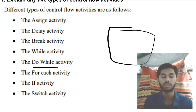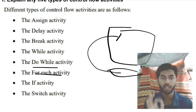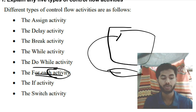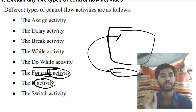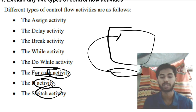Do While means you will be doing some activity and then checking a condition until it becomes false — you keep on executing the same activity repeatedly. For Each activity is used whenever you have a set of operations you need to perform for a specific number of times. If activity is used for checking if a condition is true or not, and based on that you perform some activity. Switch activity has multiple cases — whichever case matches, you perform that activity.